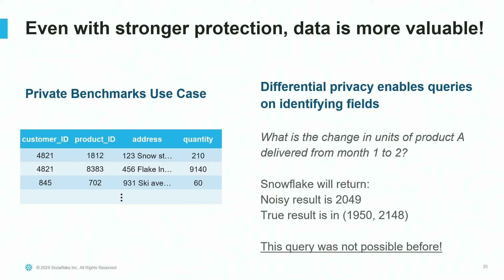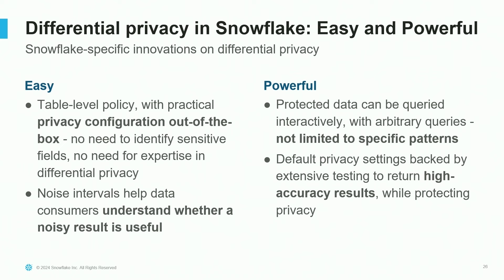You might ask — what did we give up in order to get that strong privacy? This is the beauty of differential privacy: we actually get more out of the data with this stronger protection. With privacy rules, I needed to mask the address field because it was identifying. With differential privacy, because noise is dynamically added to each query, I don't need to mask fields anymore — I can expose the entire address field. This enables data consumers to do geographic analyses they wanted to do before, while still preventing them from identifying individual customers by filtering to specific addresses.